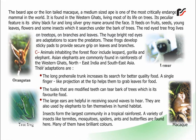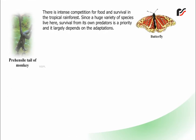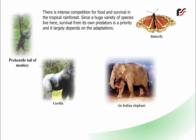Insects form the largest community in tropical rainforests. A variety of insects like termites, mosquitoes, spiders, ants, and butterflies are found here, and many of them have brilliant colours. There is intense competition for food and survival in the tropical rainforest. Since a huge variety of species live here, survival from predators is a priority and largely depends on adaptations.